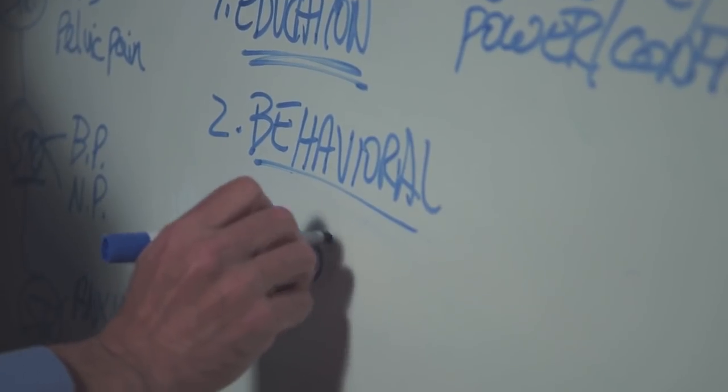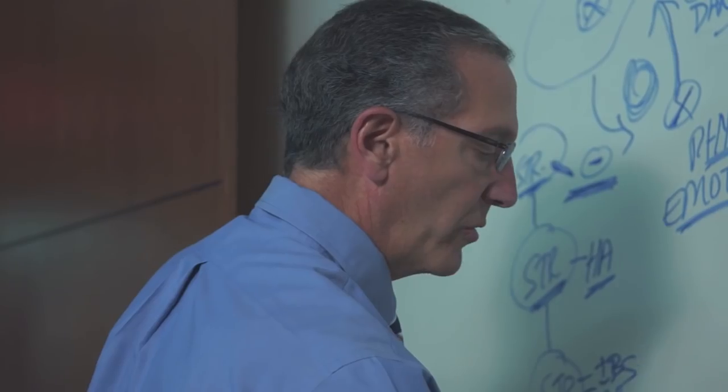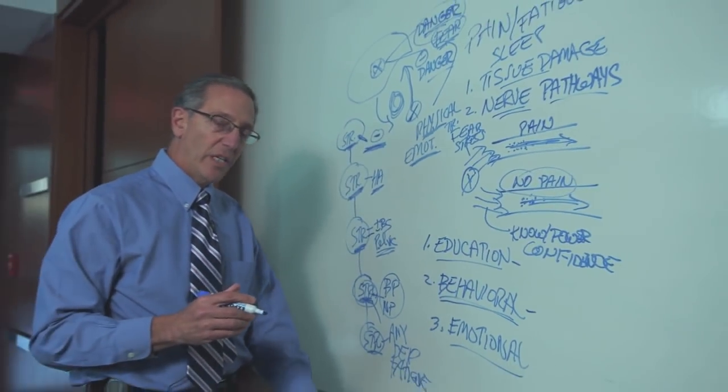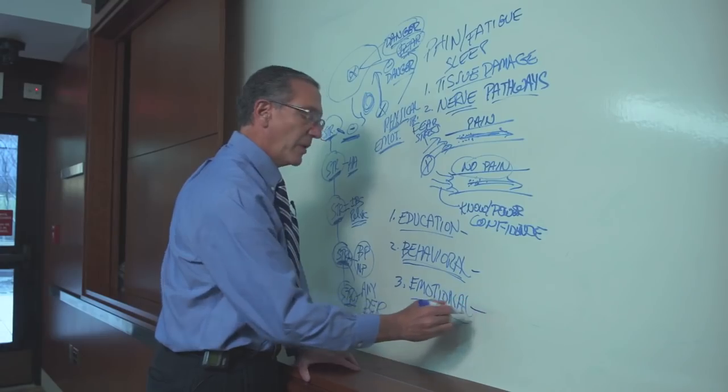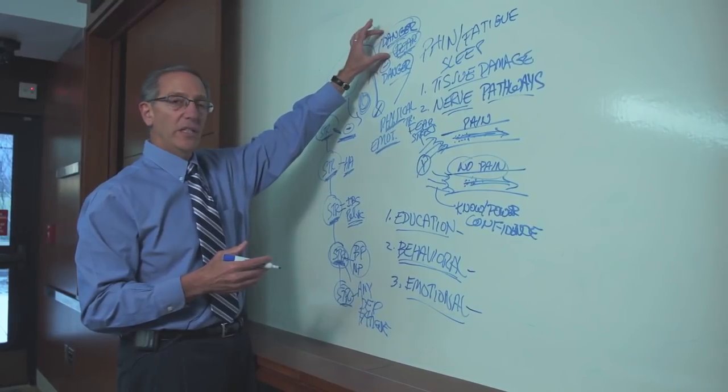The third step is emotional work. There's a whole variety of emotional techniques, including expressive writing and also intensive short-term dynamic psychotherapy, where people are actually expressing the emotions that are creating this danger signal.